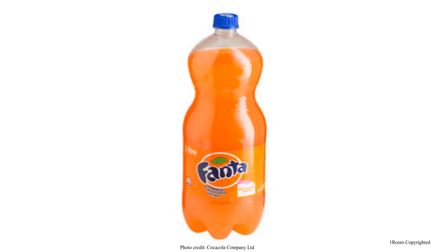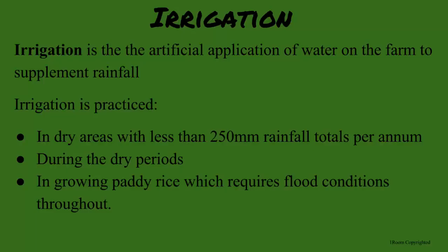What do you know about irrigation? I know that irrigation is the artificial application of water to the soil for the purpose of supplying sufficient moisture to the crops. That is a very specific and correct answer. I'm not finished, though. It is usually practiced in dry areas, during dry spells, and in growing rice paddies.